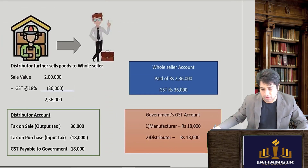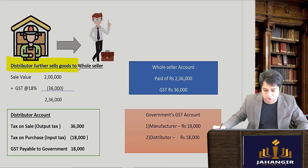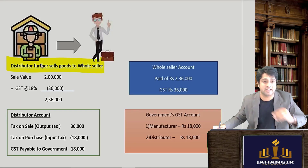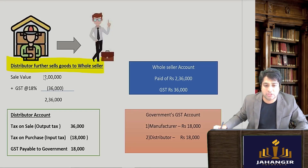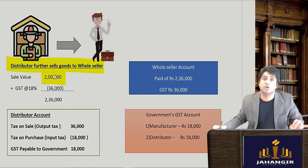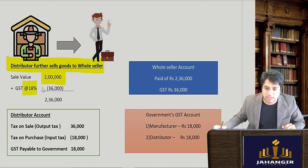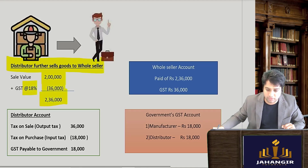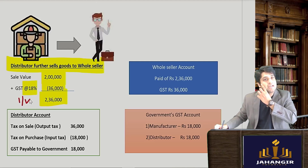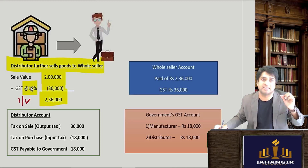Now the distributor further sells these goods to the wholesaler. He sells them for 2 lakh rupees. With an 18% GST rate, GST comes to 36,000. The invoice value is therefore 2,36,000.